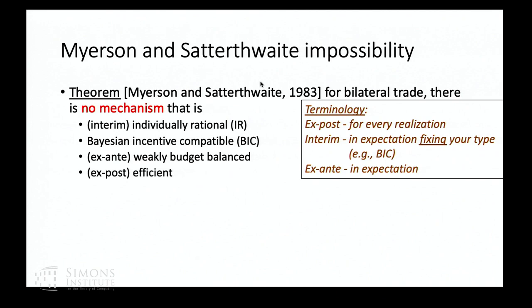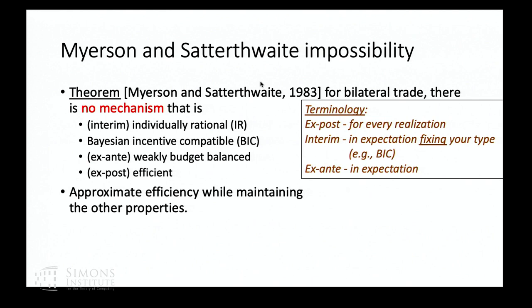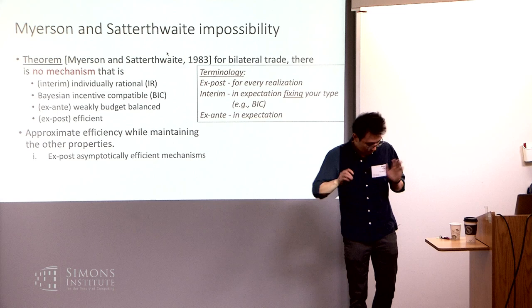It turns out no mechanism can satisfy all these conditions. There's a well-known result by Myerson and Satterthwaite showing that even in bilateral trade you cannot have a single mechanism that is interim IR, Bayesian IC, weakly budget balanced, and uses the efficient trade allocation. That's a very strong negative result, and there has been a lot of work trying to circumvent it by approximating efficiency while maintaining the other properties.